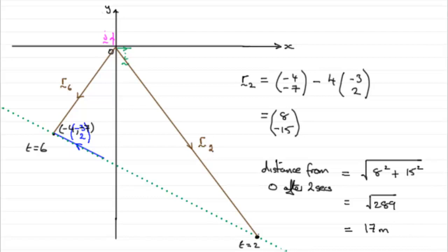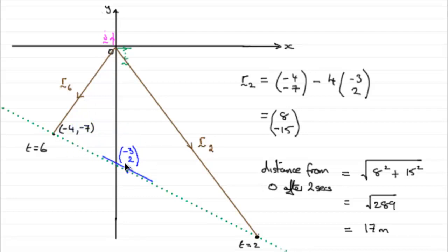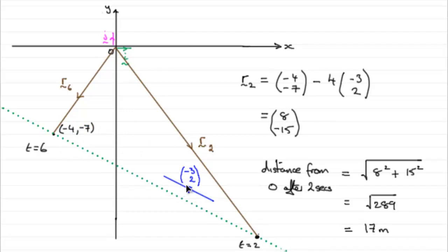Hopefully you've been able to follow what I've been doing. We go back to that point and subtract four of these velocity vectors, which takes us to the position at t equals two.